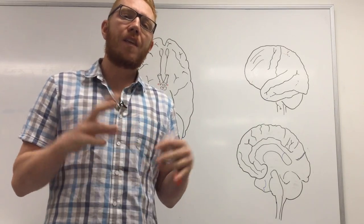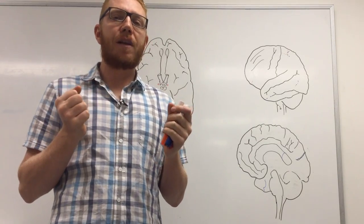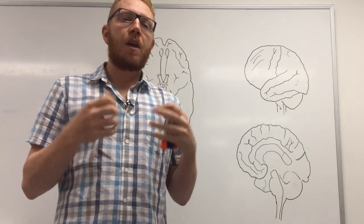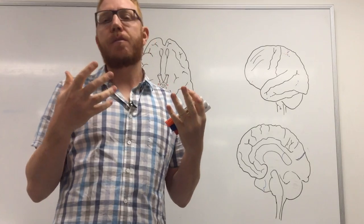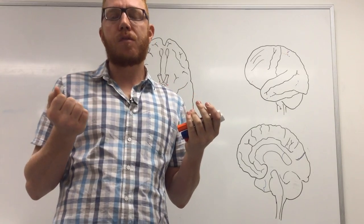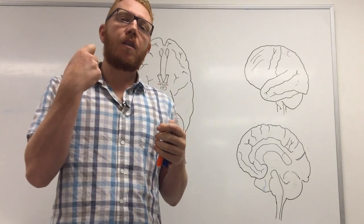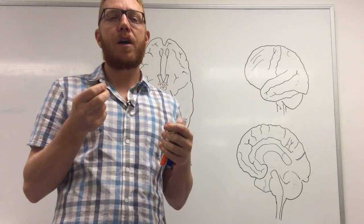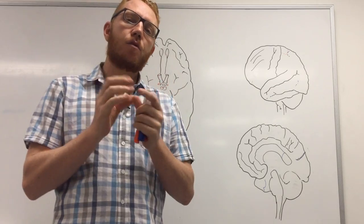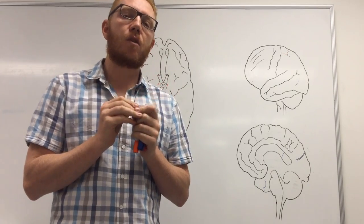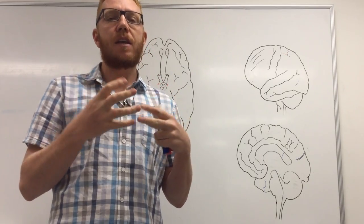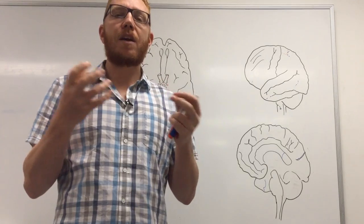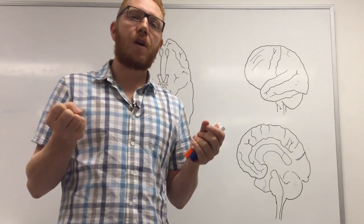Welcome to this lecture on the arterial blood supply to the brain. The main learning outcomes from this lecture are firstly the main vessels that supply the brain and how they form, particularly the circle of Willis, and secondly what vessels supply the major regions of the brain.